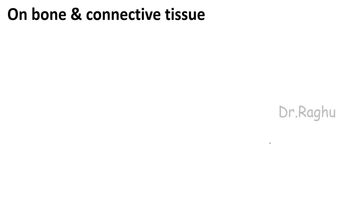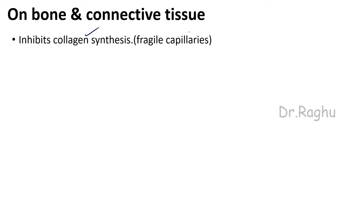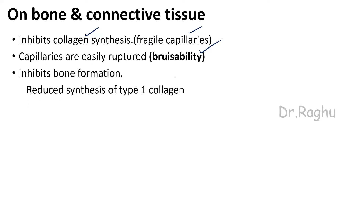On bone and connective tissue: cortisol inhibits collagen synthesis, and since collagen is a major constituent of capillaries, excess cortisol makes capillaries very fragile. Even minimal injury can rupture capillaries, resulting in easy bruising. On bone specifically, cortisol inhibits bone formation by reducing synthesis of type 1 collagen, inhibiting osteoblast formation, and thereby preventing mineralization of the bone.